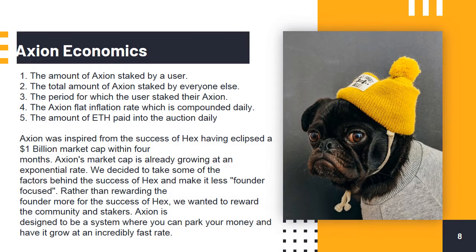Axion Economics: Axion generates interest through the idea of inflation. The Axion smart contract pays out based on 5 basic principles: 1) The amount of Axion staked by a user; 2) The total amount of Axion staked by everyone else; 3) The period for which the user staked their Axion; 4) The Axion flat inflation rate, which is compounded daily; 5) The amount of ETH paid into the auction daily.